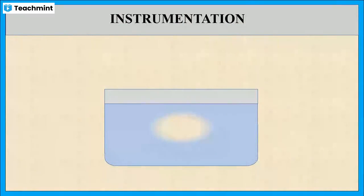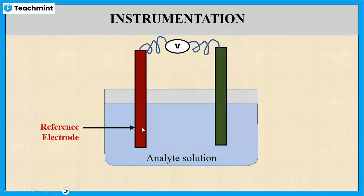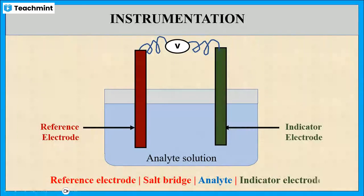We are taking two electrodes immersed in analyte solution, which are connected through a potentiometer. One electrode acts as a reference electrode and another one acts as an indicator electrode. This can be represented as: reference electrode — salt bridge — in contact with the analyte solution — in contact with the indicator electrode.